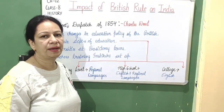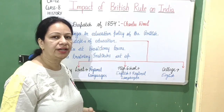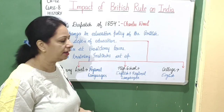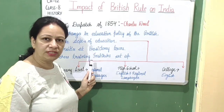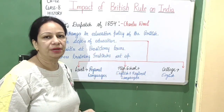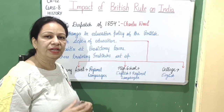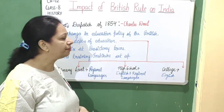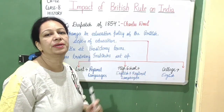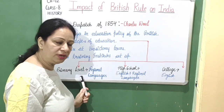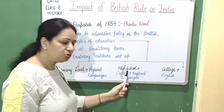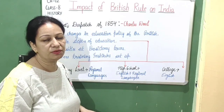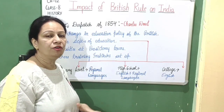Now let us talk about Wood's Dispatch of 1854. In 1854, a change in English education policy was introduced by Charles Wood, who was the President of the Board of Control of India. Major changes were made: there would be separate departments of education at different levels — primary level in regional languages, high school level in both English and regional languages, and college level only in English medium.